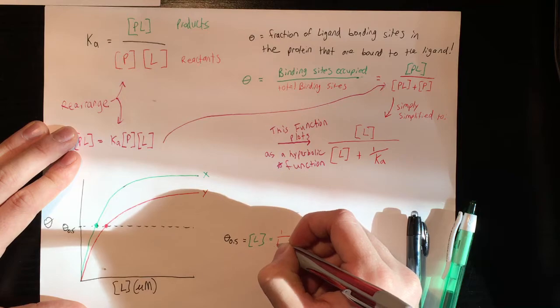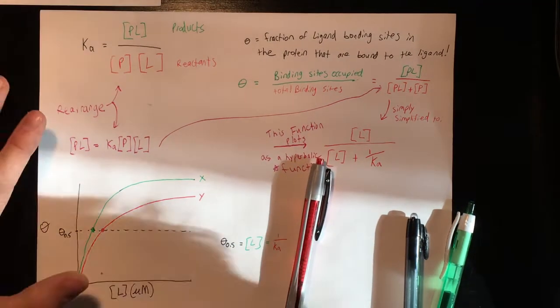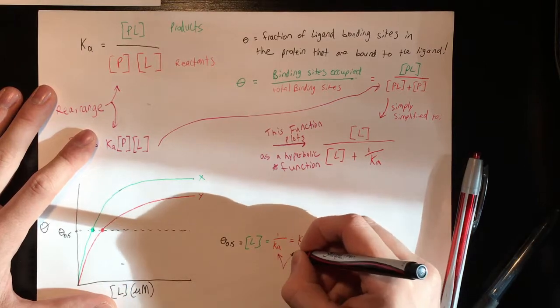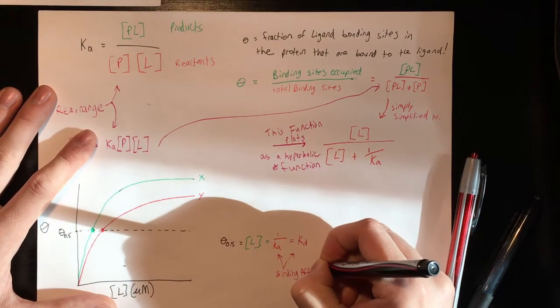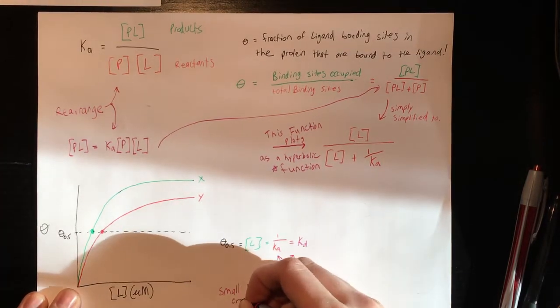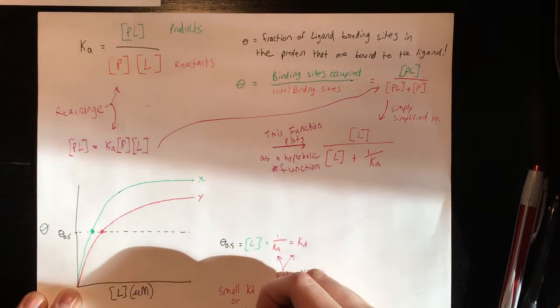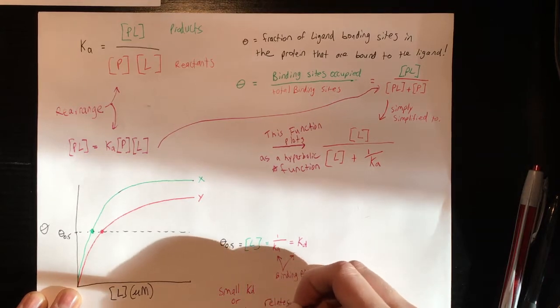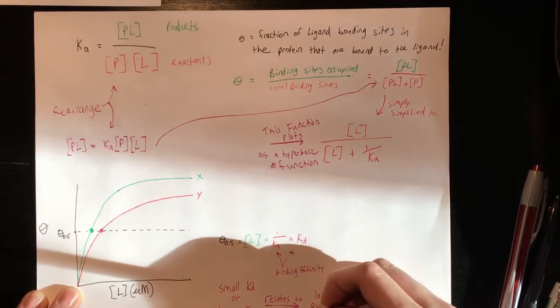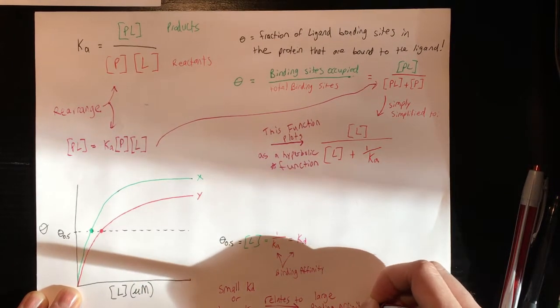And so a relationship to get from this is that the theta at 0.5 is where your ligand complex is equal to 1 over Ka or your KD, which is your equilibrium for the reverse reaction. And these are how you determine your binding affinities. So a small KD or a large Ka will equal a higher binding affinity for the ligand and the complex.